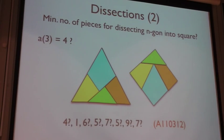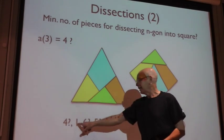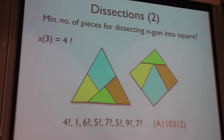So, four seems... The minimum number of pieces for dissecting an N-gon into a square. We know just one term. For the others, all that is known. This seems to be shocking.